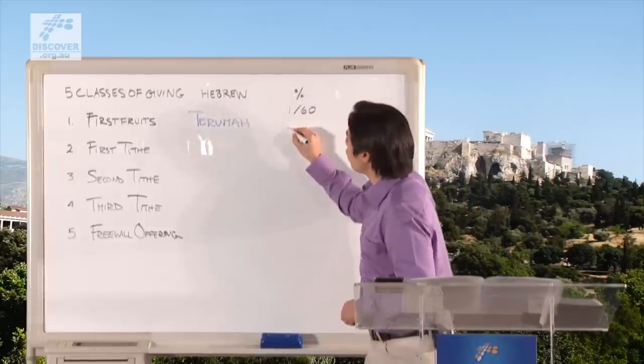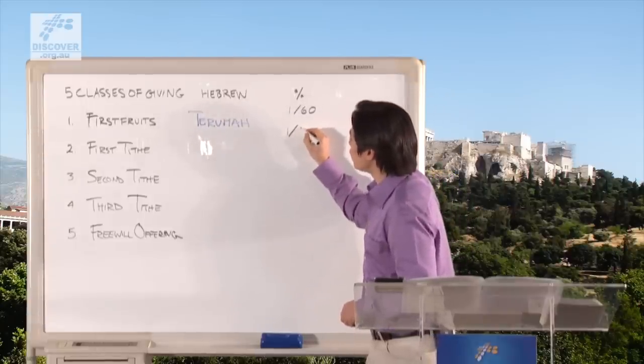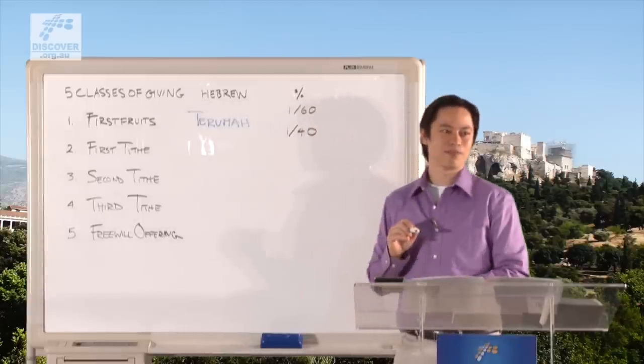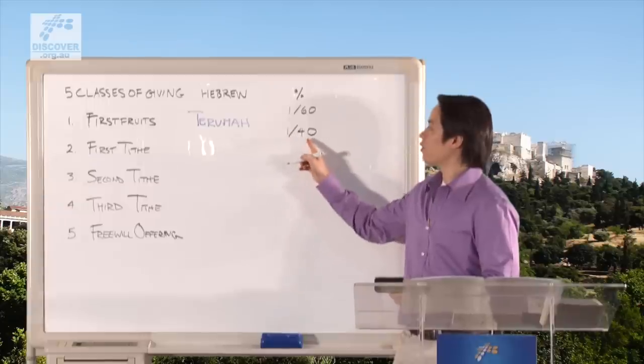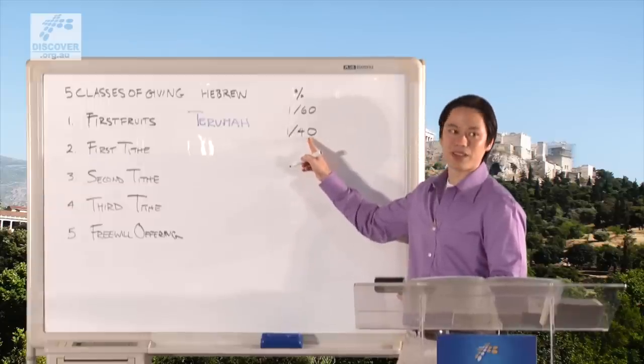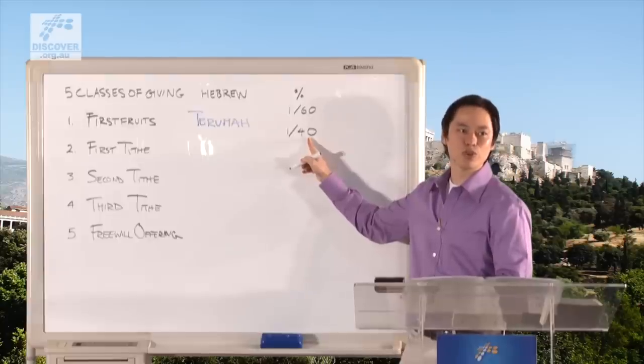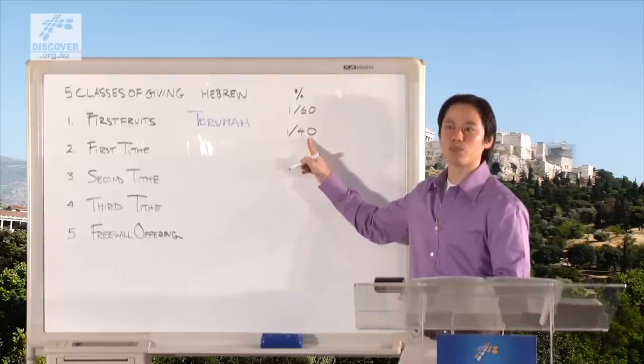Hillel says no, that's too stingy, you should give 1/40th of your income. One out of 40 weeks of pay should be your Terumah, consider your first fruit offering to be given to the priests.